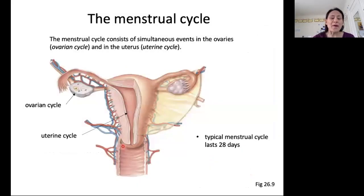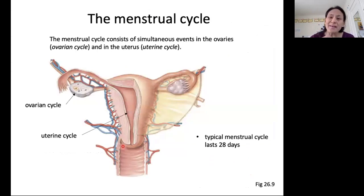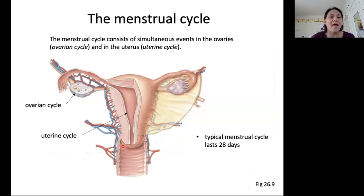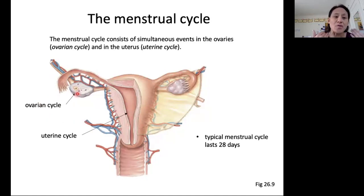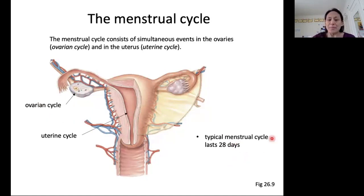Now we're ready to talk about the menstrual cycle. The way we view the menstrual cycle is as two parallel sets of events happening in the ovaries and in the uterus. The events happening in the ovaries we refer to as the ovarian cycle, and the events happening in the uterus we refer to as the uterine cycle. A typical menstrual cycle, at least according to textbooks, is about 28 days.